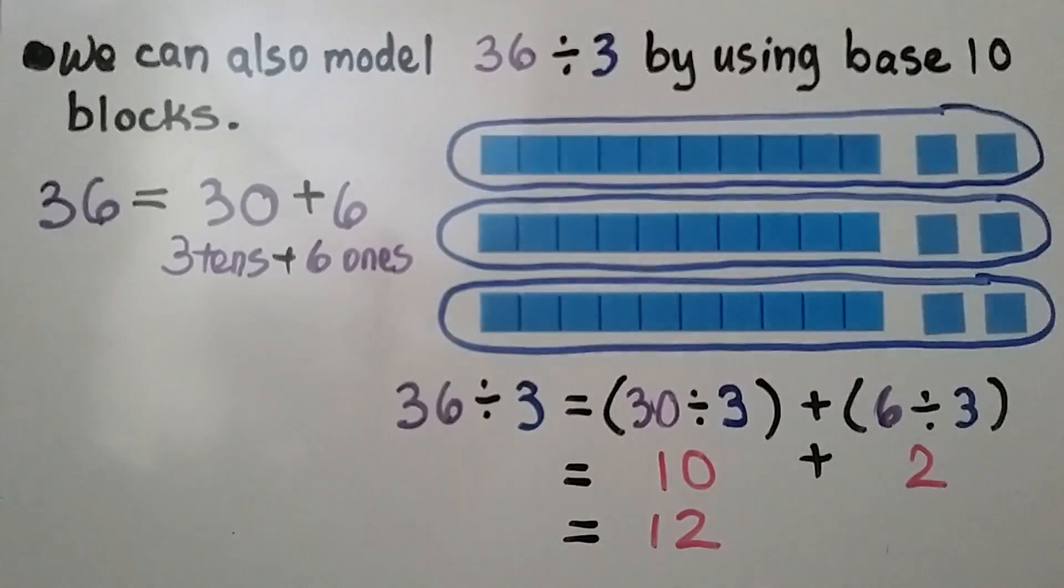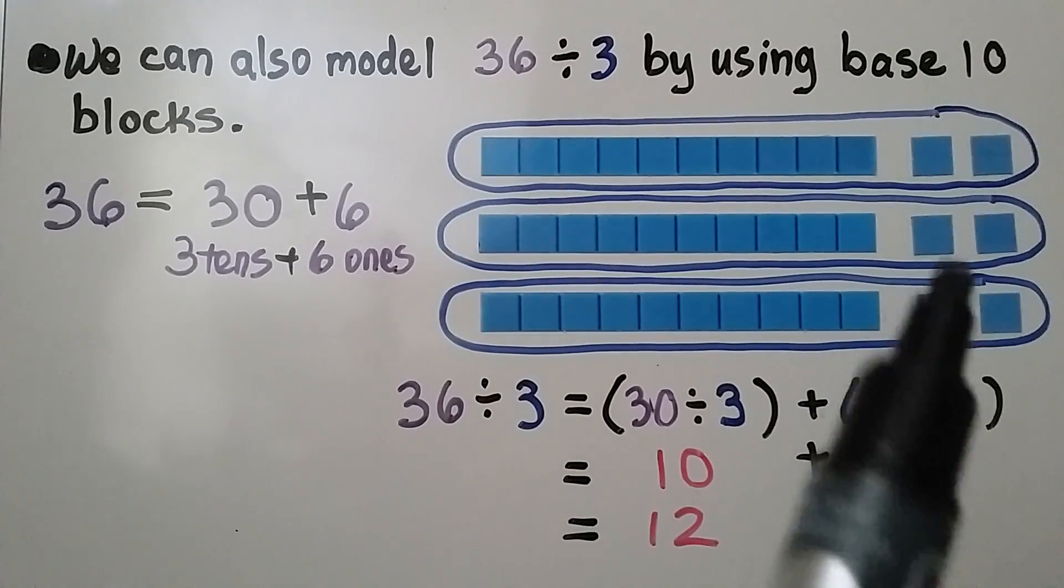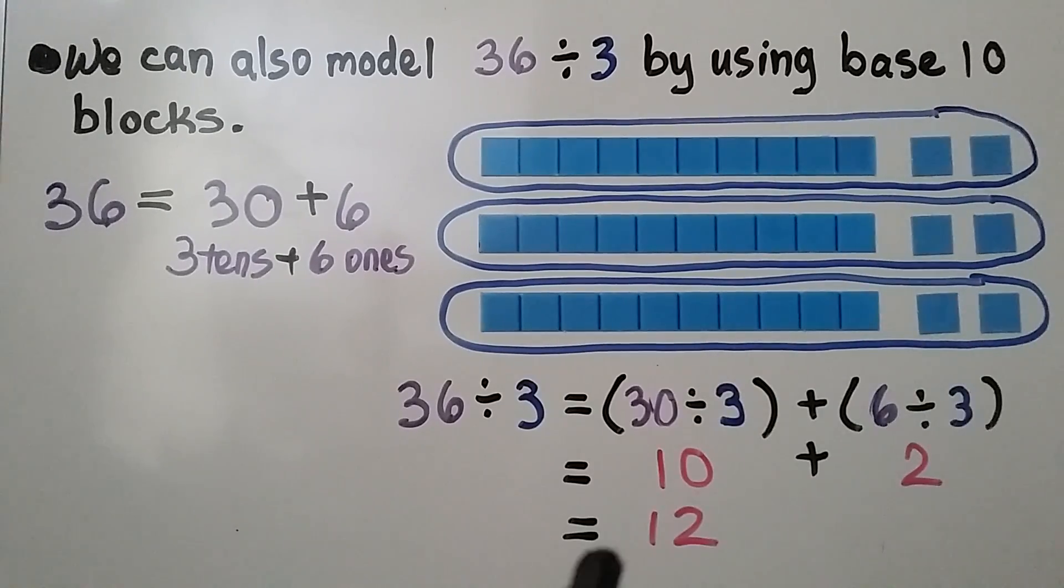and we put them into groups. So we have three groups. We have 30 divided by 3 and 6 divided by 3. There's 12 in each group. 36 divided by 3 is equal to 12.